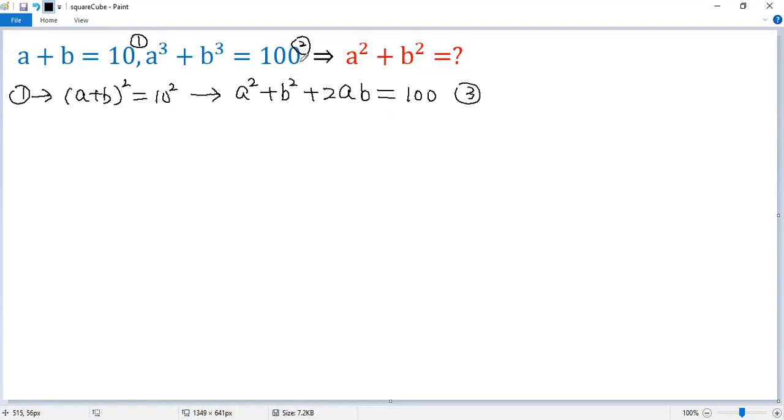To connect the second condition and the conclusion, let's use the sum of cubes formula. We know the left side equals a plus b, so that's from 2, times a squared minus ab plus b squared equals 100. Now by condition 1, a plus b equals 10.